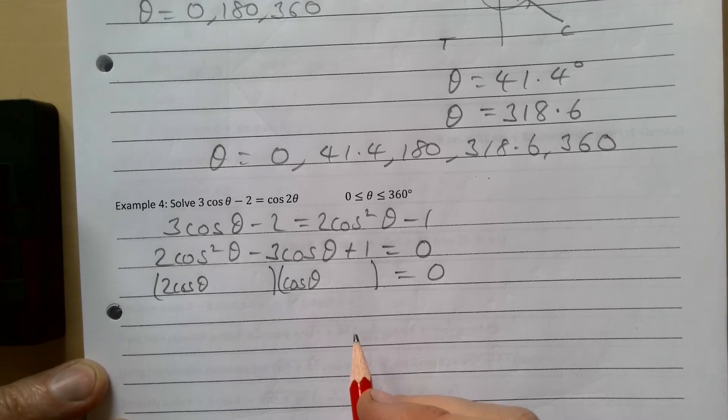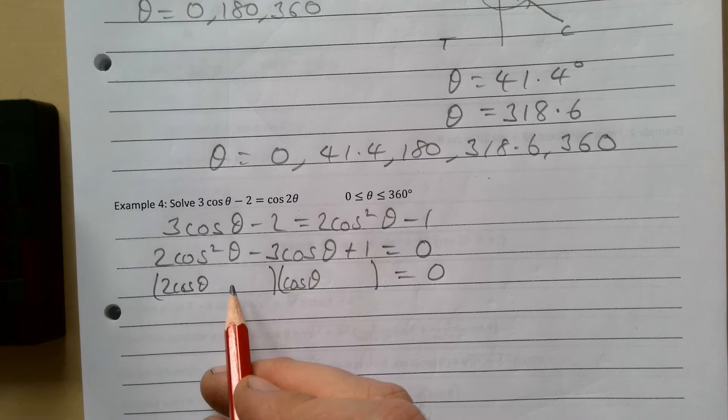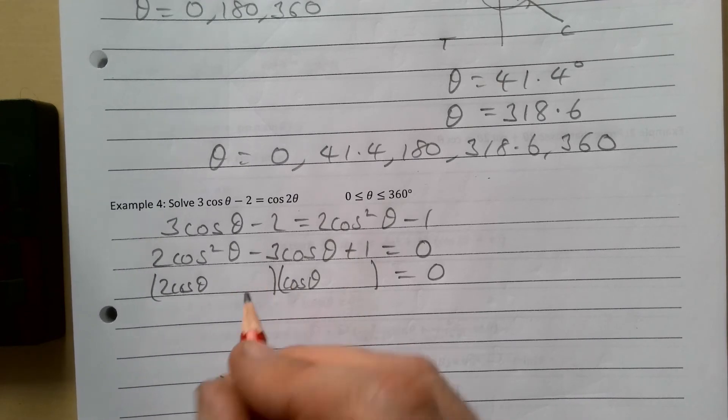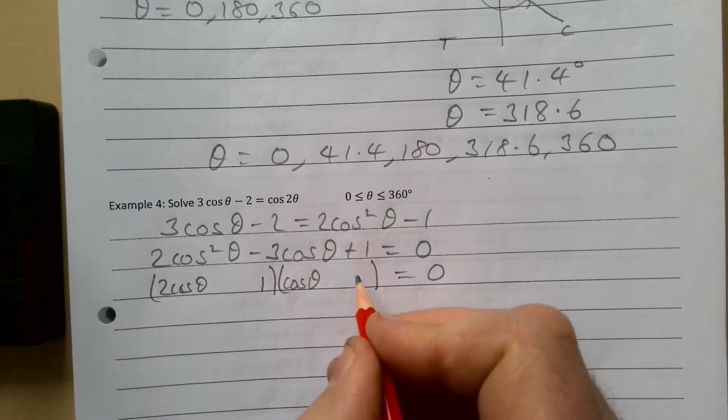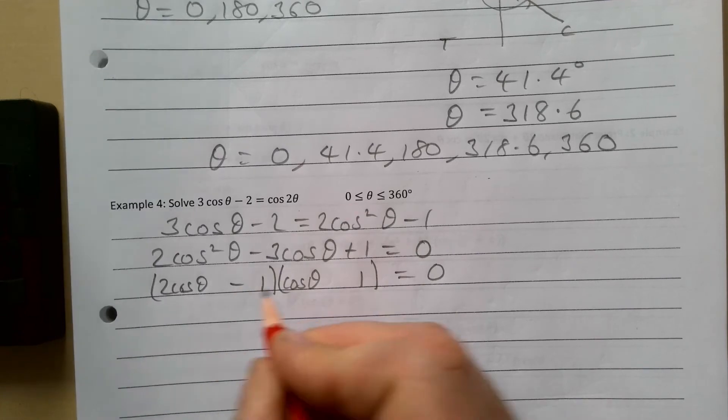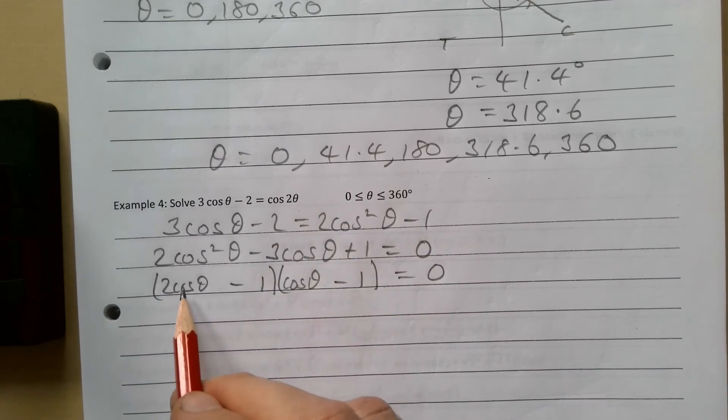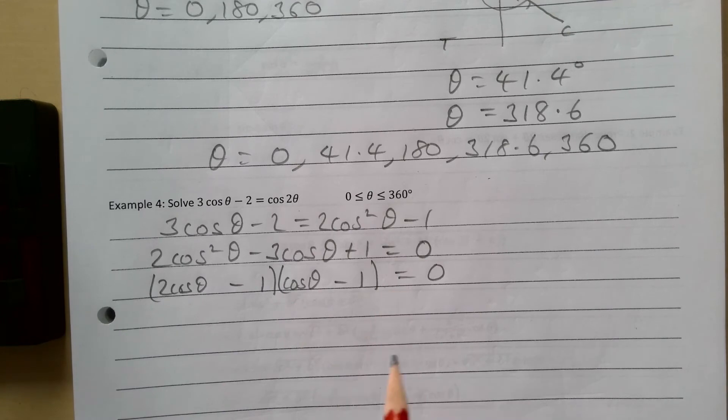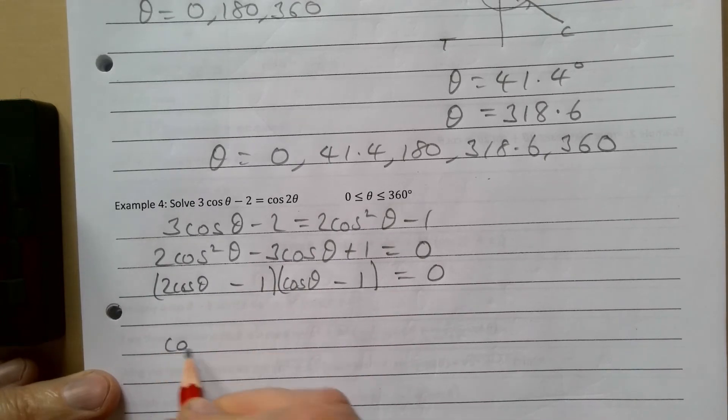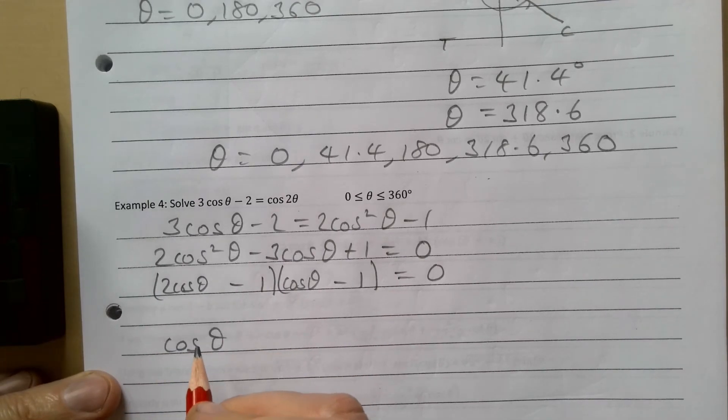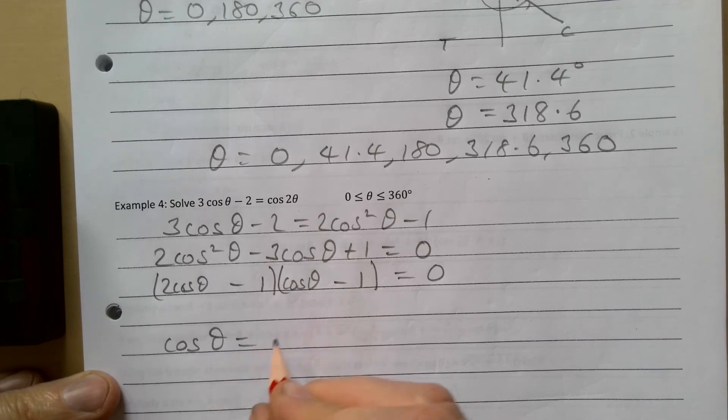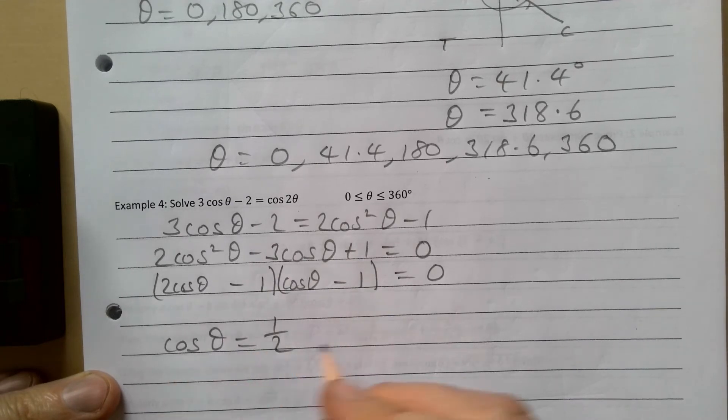Oh yeah, minus. Okay, so that's easy enough. We have that. That gives us cos θ, sorry just a bit of a blank as I always tend to, so it gives me cos θ = 1/2 or it gives me cos θ = 1.